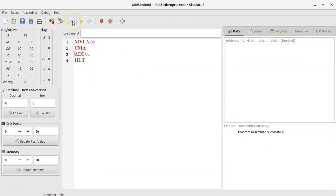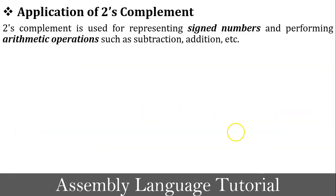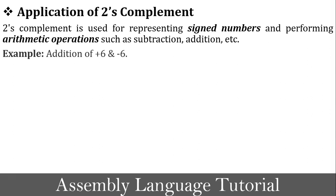The next topic is the application of 2's complement. 2's complement is used for representing signed numbers and performing arithmetic operations such as subtraction and addition. Let's take one example: the addition of +6 and −6. We know that +6 plus −6 equals 0, but here we perform this addition using binary numbers. The first task is to convert +6 into binary: 00110.